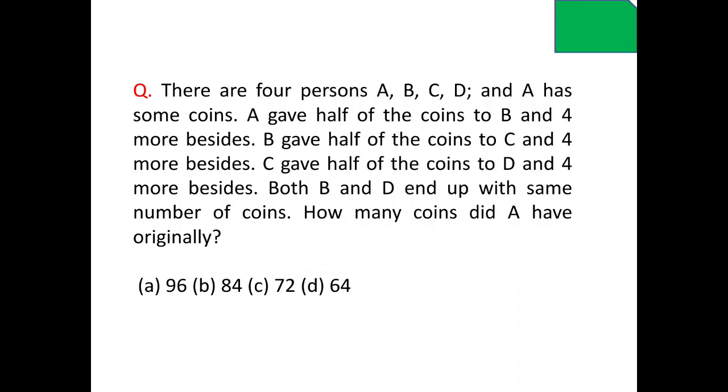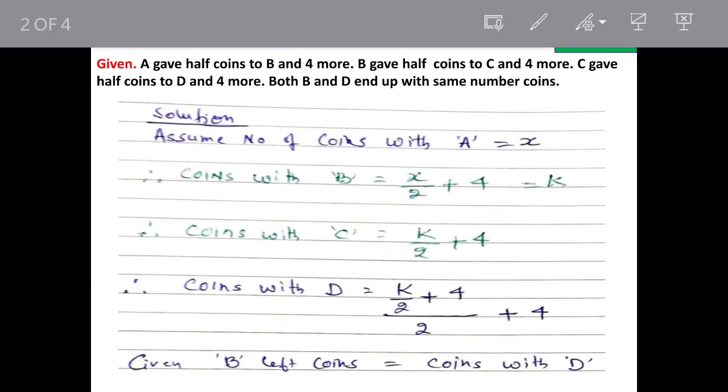We'll see the solution. Now let's assume that number of coins with A are X. So the coins with B will be X by 2 plus 4 because he is giving half of the coins plus 4 to B. So the coins with B will be X by 2 plus 4 and we'll assume this as equal to K because we'll be using this factor again and again.